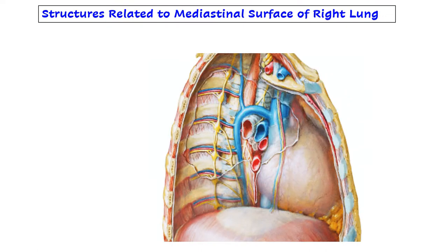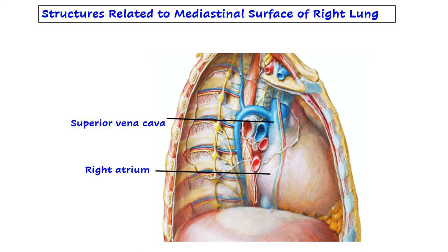Let us look at the structures related to the mediastinal surface of the right lung. In this picture the right lung has been removed. This is the root of the right lung and here we can see all the mediastinal structures from the right side. The first structure is the right atrium, and a part of the right ventricle will also come in relation. The right lung comes in relation to the right chambers of the heart, which carry deoxygenated blood. Deoxygenated blood comes to the right atrium via the superior vena cava and the inferior vena cava.